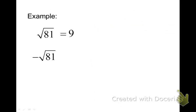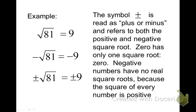When you have the negative symbol out in front of the radical, that's telling you that you want to find the square root of 81 and then take the opposite of that. In this case, that's going to give you a negative answer. The plus or minus symbol is going to tell you that they want both the positive and the negative square root.